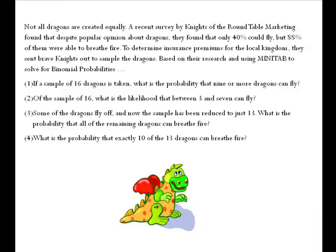Of the sample of 16, what is the likelihood that between 3 and 7 can fly? In number 3, some of the dragons fly off and now the sample has been reduced to just 13. What's the probability that all of the remaining dragons can breathe fire? And lastly, what's the probability that exactly 10 of the 13 dragons can breathe fire?